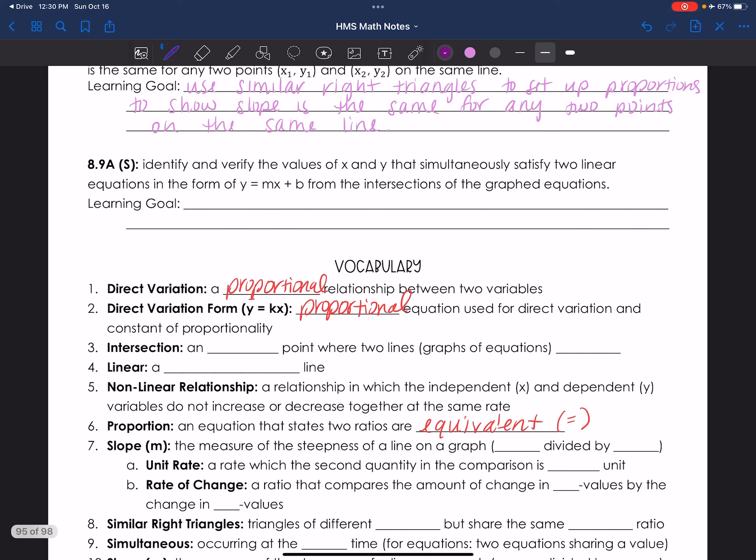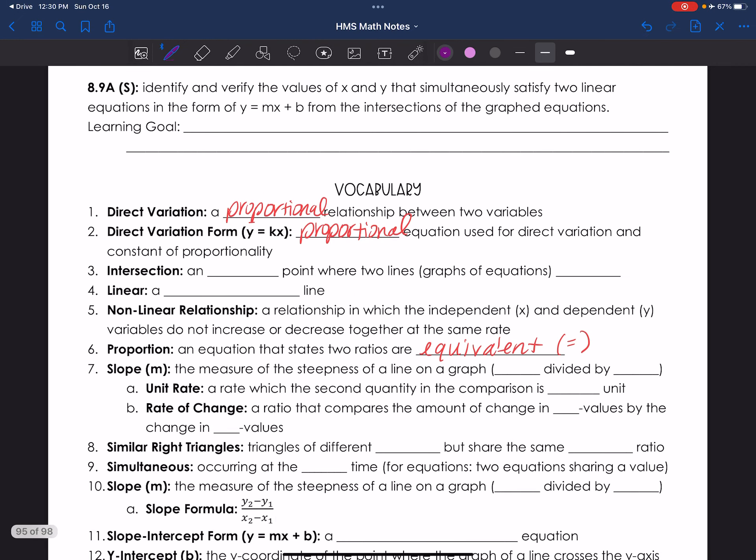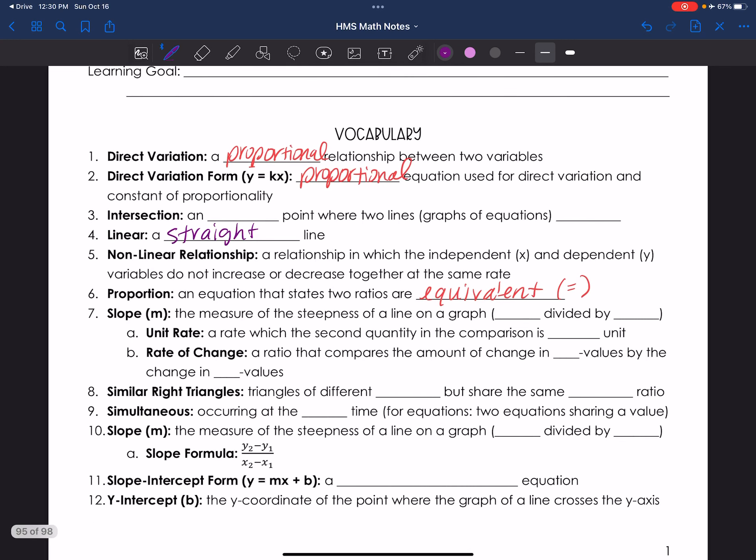So let's go through some vocabulary terms. And you guys know that you can always pause and write, right? Like don't just let me keep talking if you're falling behind. Pause it. That's the beauty of the Ed puzzles. Alright, linear, number four, is a straight line. That's what we're talking about. Slope M, number seven, the measure of the steepness of a line on a graph. This is rise divided by run. Rise over run.